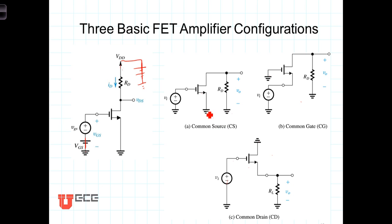It's found by, or it results from shorting the source to ground, thus the name common source. The signal is applied to the gate, and the output is taken at the drain.